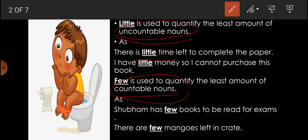Now look, there is little time left to complete the paper. So students, there is some time left to complete the paper, but as we have time here we have used little. Next, I have little money so I cannot purchase this book. So little means that this is a very small amount. Next, few - difference between little for uncountables and few for countables. Now Shubham has few books. We can count. Next, there are few mangoes. So students, I think you must have understood the difference between little and few.